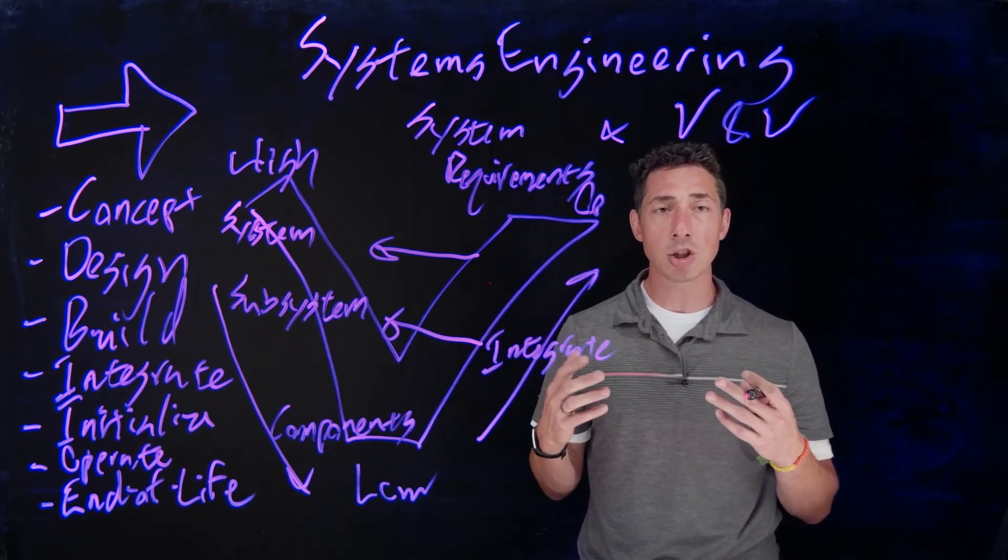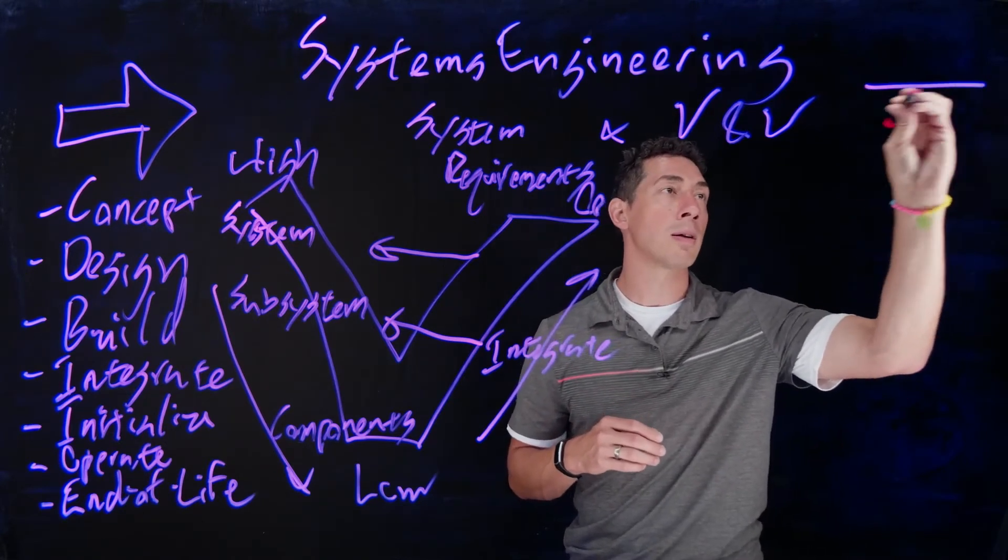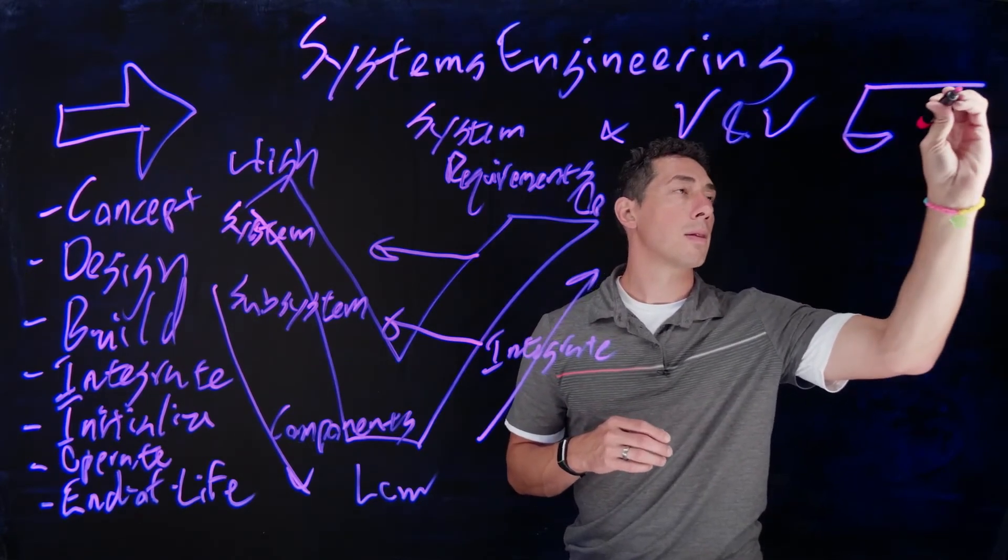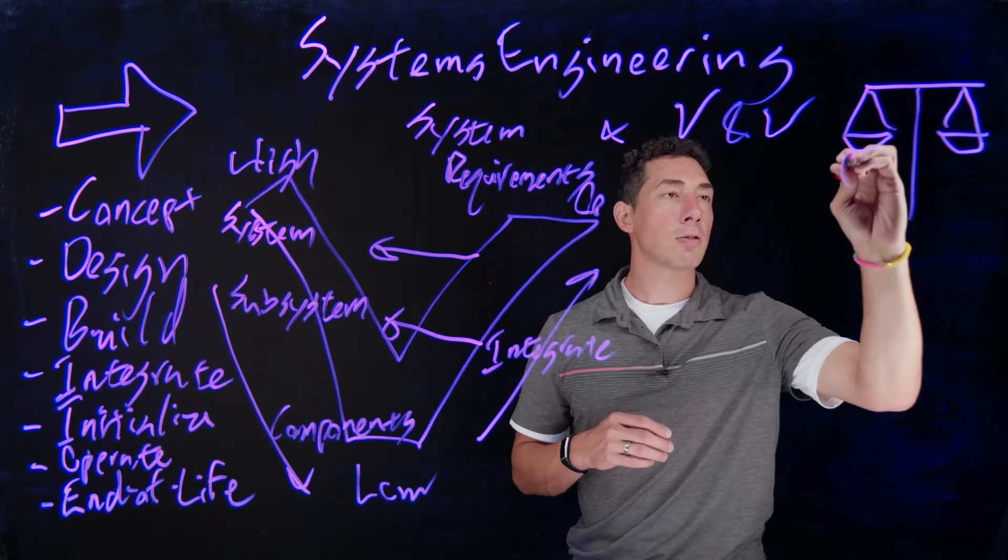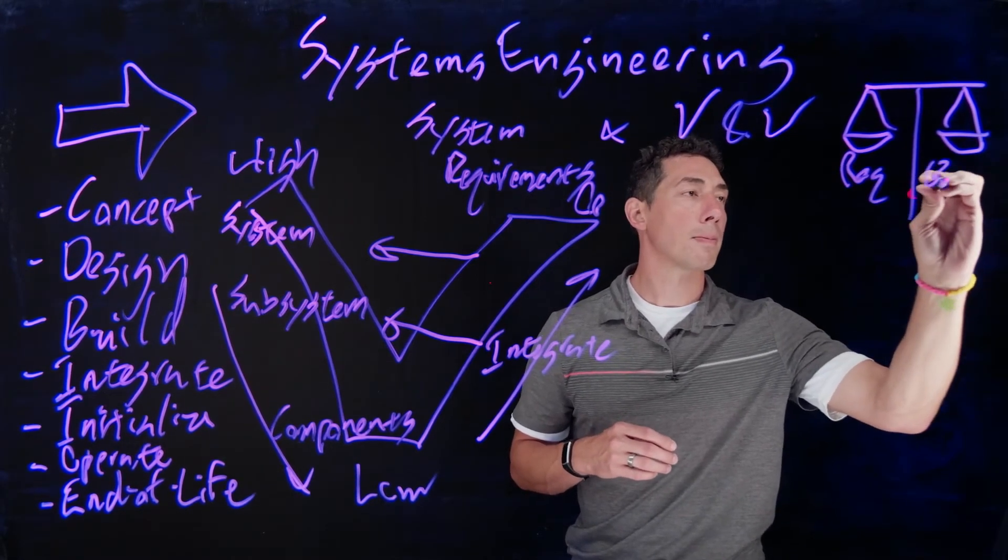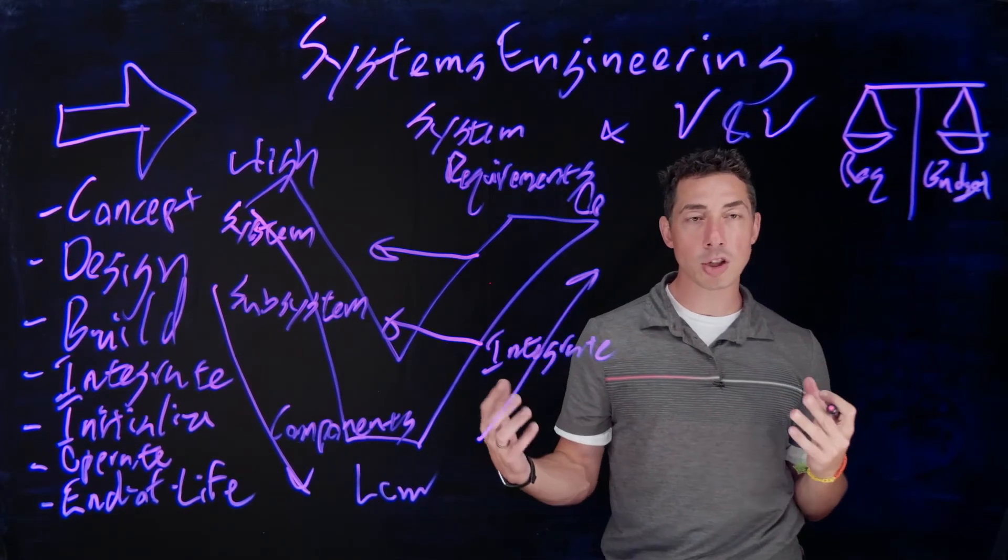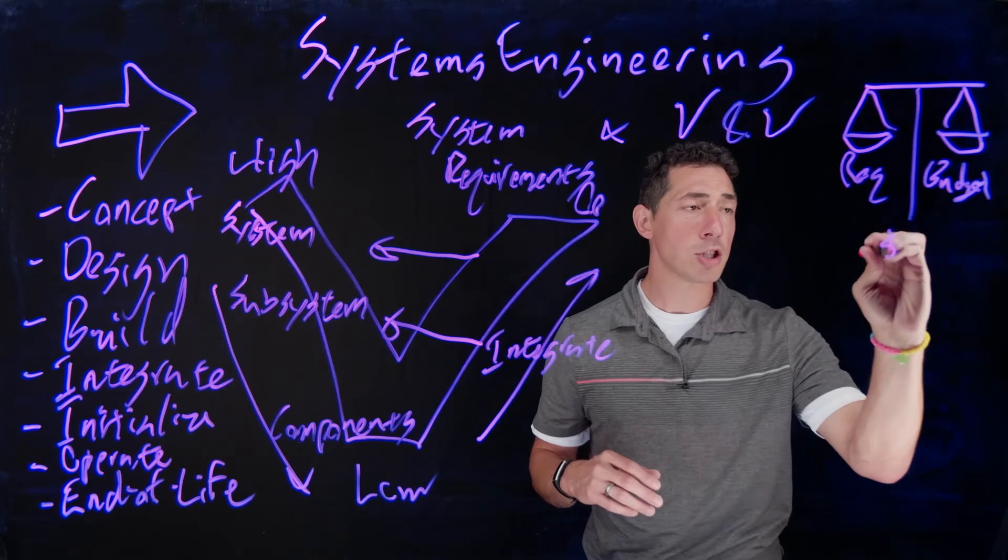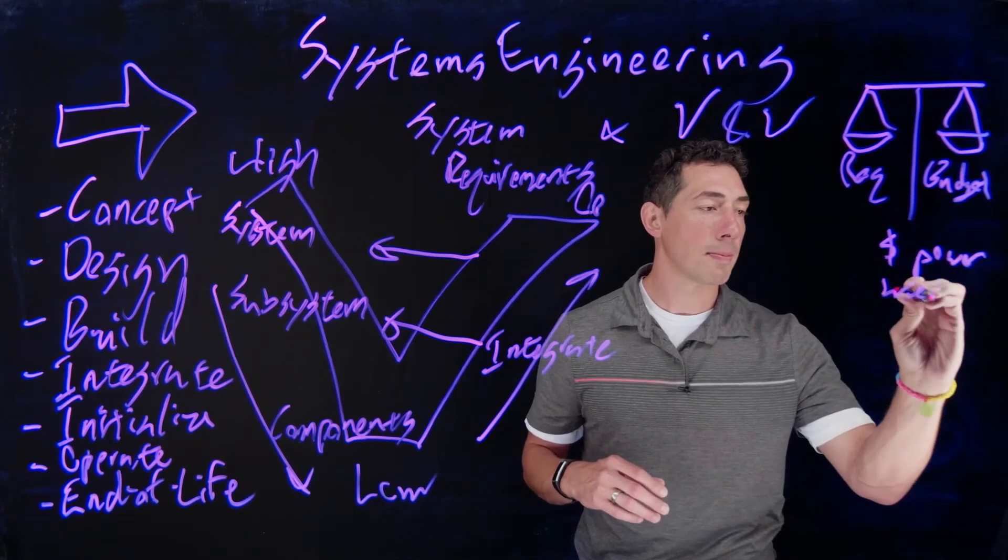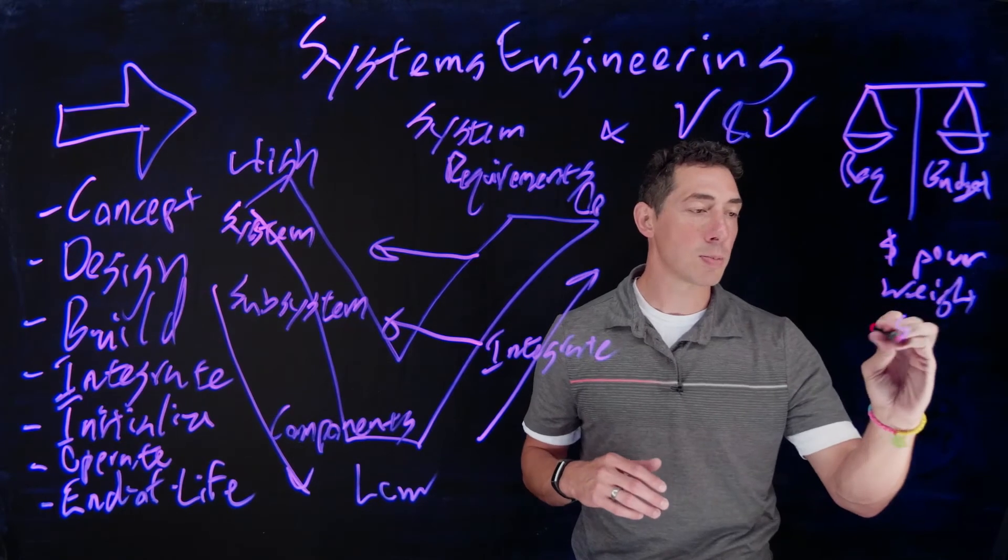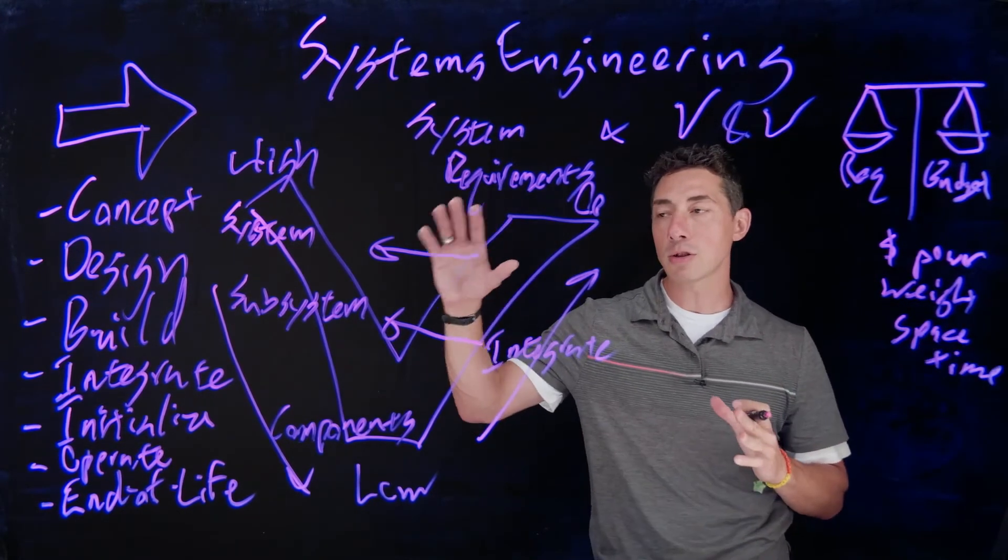And in the role of a good system engineer or a good systems integrator, you're constantly doing this balancing act where you've always got your requirements on here, you've got your budget over there. And that budget can be a lot of different things. That budget can be money, it could be power, it could be weight, it could be space, it could be time.